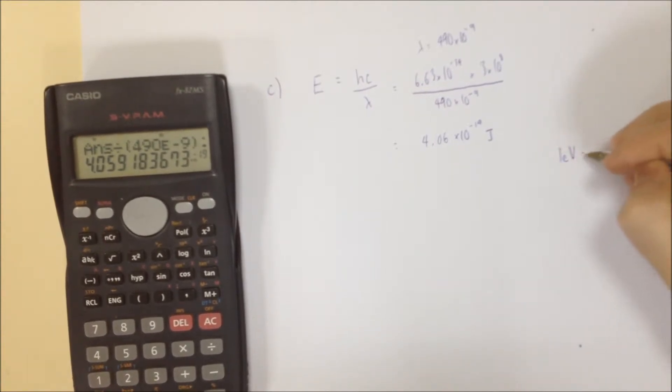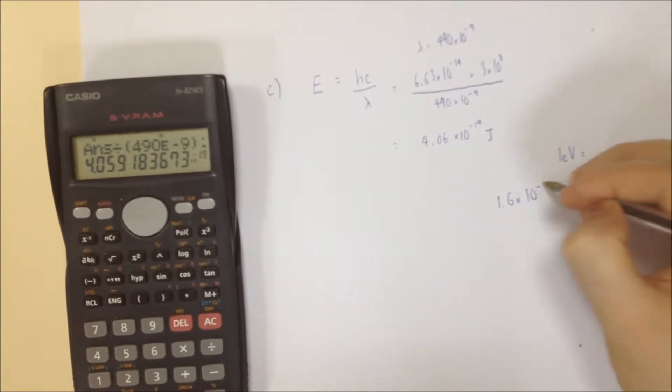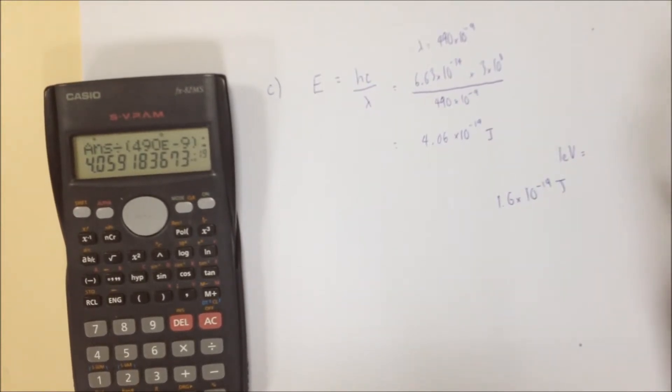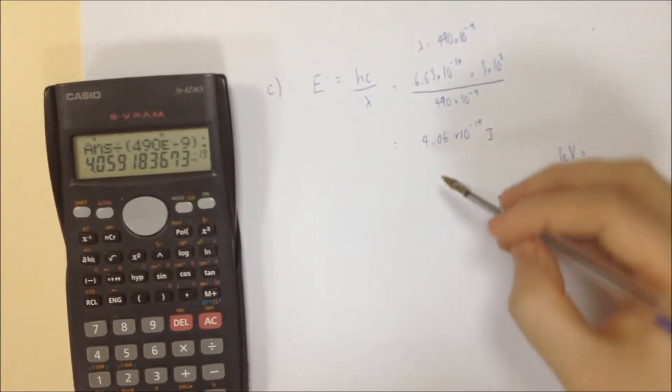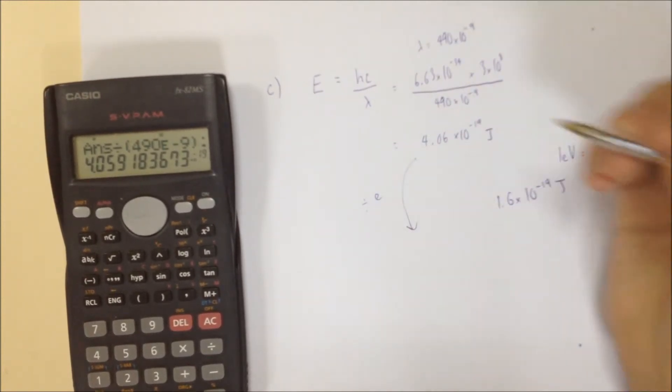it makes much more sense if we actually use electron volts to express it. Remember that 1 electron volt equals 1.6 times 10 to the minus 19 joules. So how can we convert? Well,